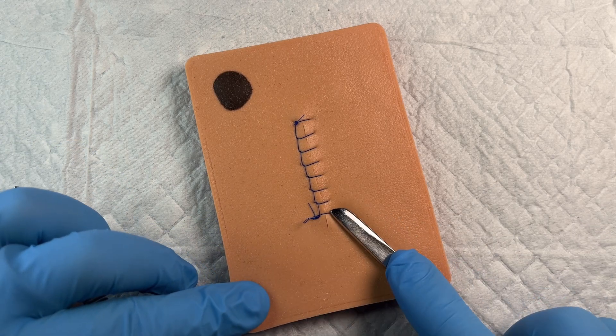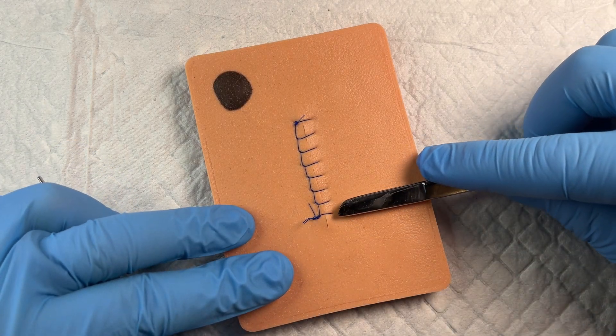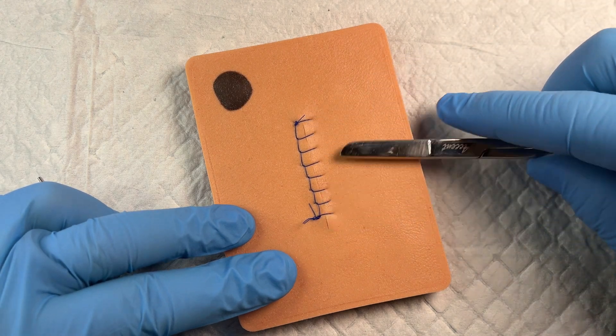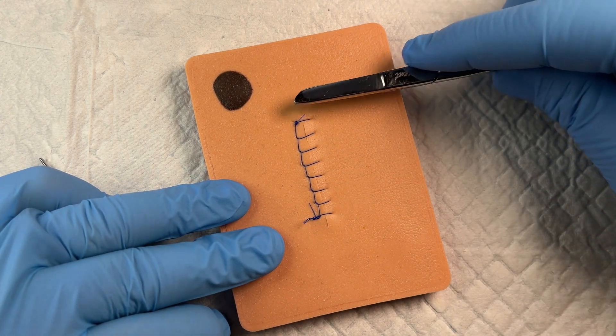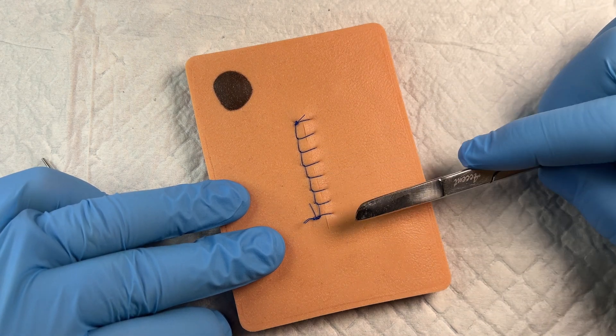All right, in this quick video, I'm going to talk about best practices when it comes to removing sutures that are of a running, locking nature like this. If you have a continuous suture that needs to be removed, how do you remove it best?